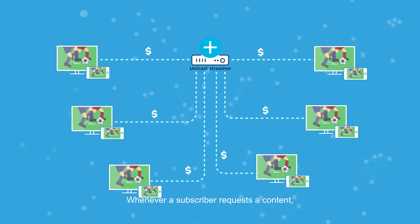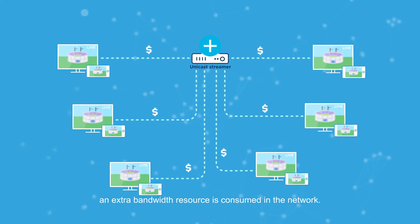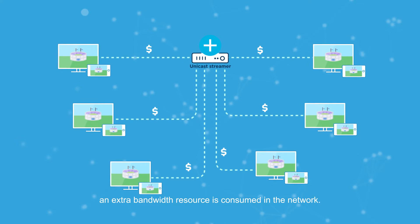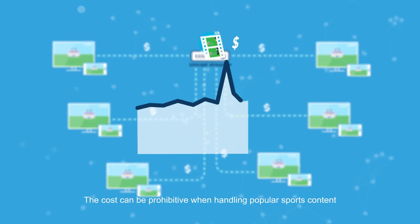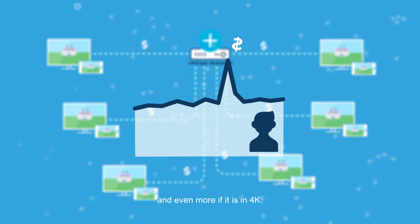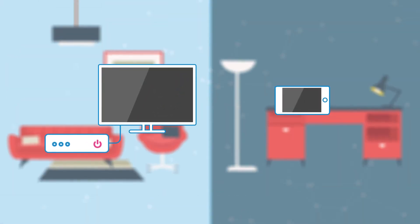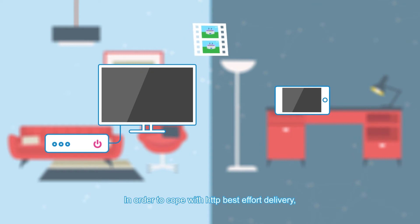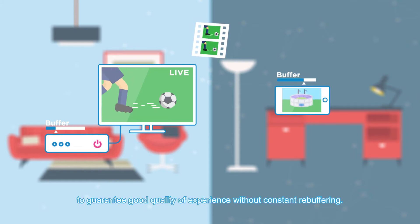Whenever a subscriber requests content, an extra bandwidth resource is consumed in the network. The cost can be prohibitive when handling popular sports content, and even more so if it is in 4K. The second hurdle is latency.